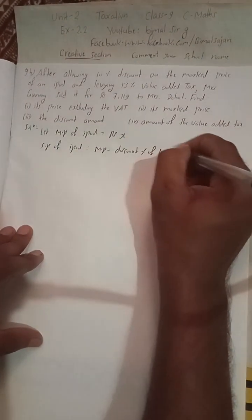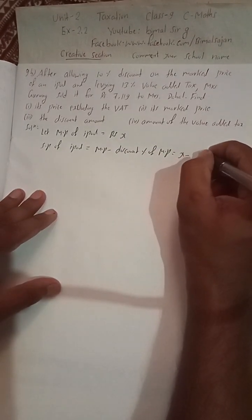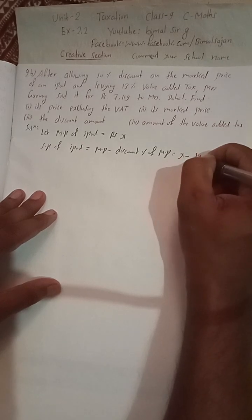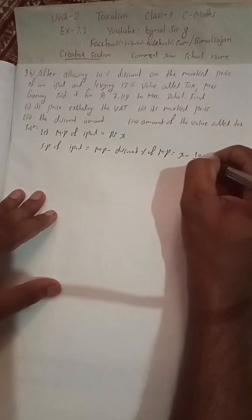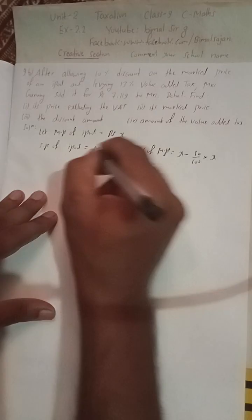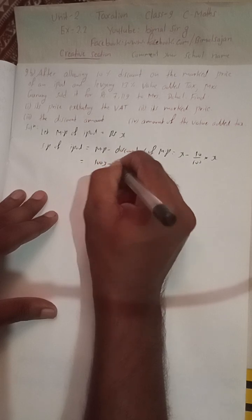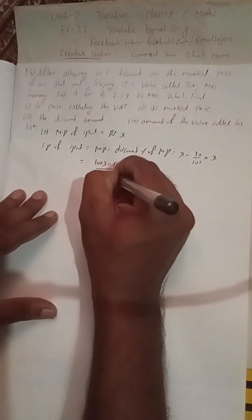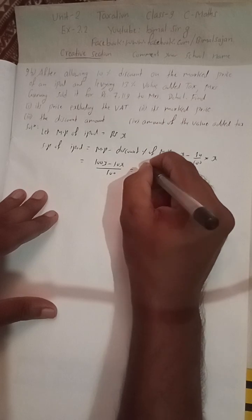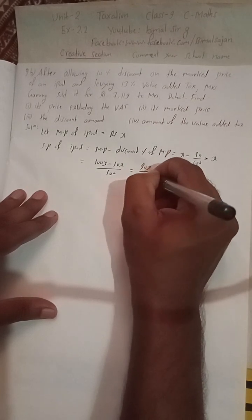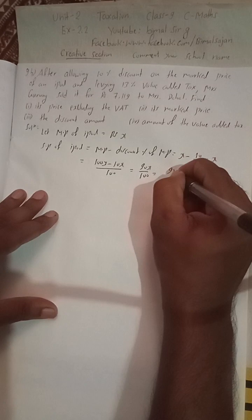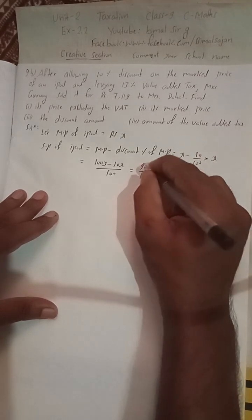10 percent discount means x minus 10 divided by 100 times x. This will be 100x minus 10x divided by 100, which equals 90x by 100, equal to 9x by 10 when you cancel. So SP of iPod is 9x by 10.